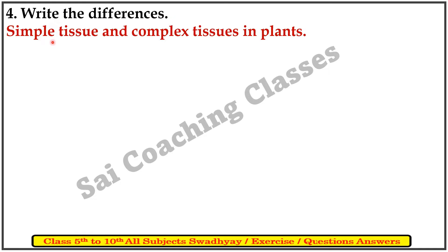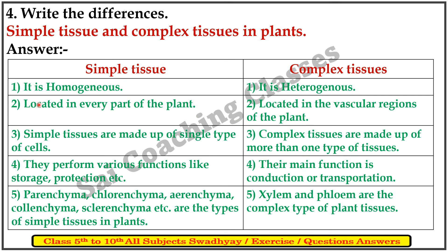Differences between simple tissue and complex tissue of plant: It is homogeneous simple tissue, while complex tissue is heterogeneous. Simple tissue is located in every part of the plant; complex tissue is located in the vascular regions. Simple tissue is made of a single type of cell; complex tissue is made of more than one type of cell.